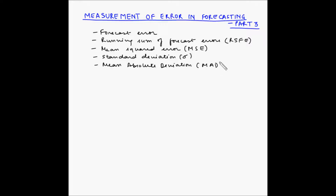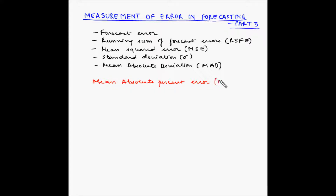Also known as MAD. Now in this video we will look at another term called mean absolute percent error, also known as MAPE. Sometimes this is also known as mean absolute percent deviation. So let's see how to find out the mean absolute percent error.